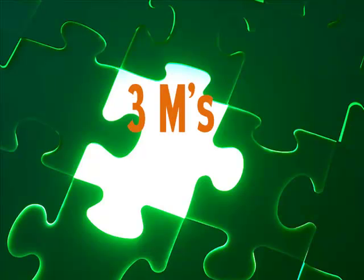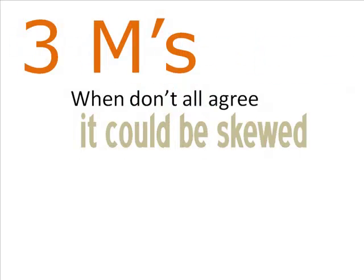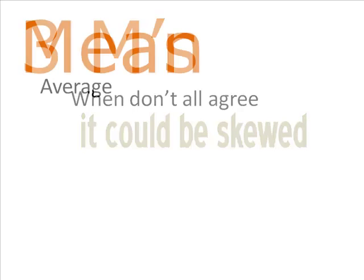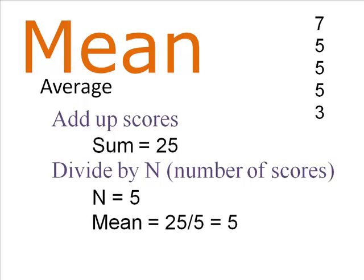We're also lucky that we have three measures of central tendency: mean, median, and mode. In a normal distribution, they all agree. We know that when the three don't agree, we need to look carefully at the data. The mean is the average — just add up the numbers and divide by n, the number of scores. It's that easy.